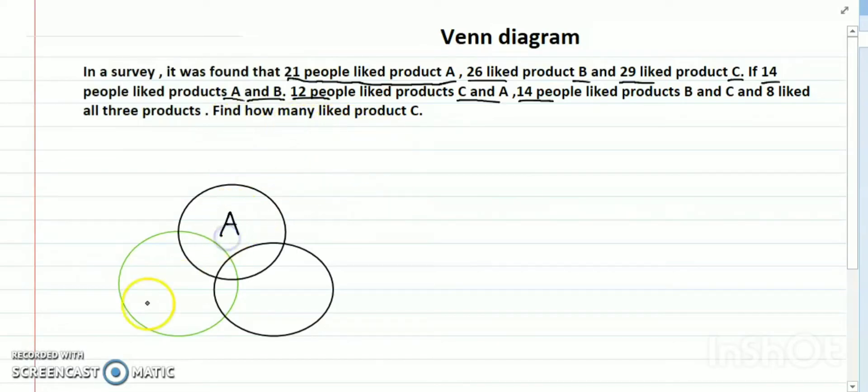Let's say this is A, this is B, and this is C. So N(A) equals 21, N(B) equals 26, N(C) equals 29. Remember friends: 29, 26, 21.